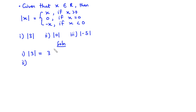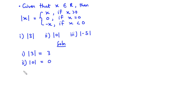For (ii), the absolute value of x is equal to zero if x is equal to zero. Since the real number in question is zero, the absolute value of zero is equal to zero.